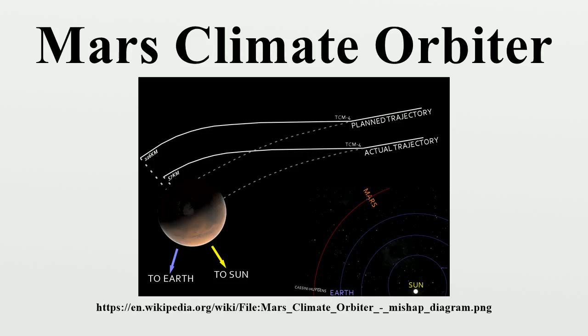The cost of the mission was $327.6 million total for the orbiter and lander, comprising $193.1 million for spacecraft development, $91.7 million for launching it, and $42.8 million for mission operations.